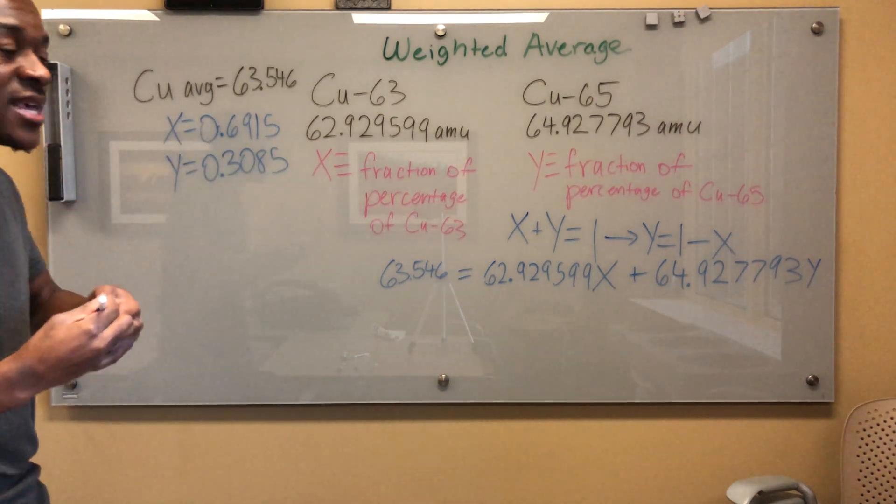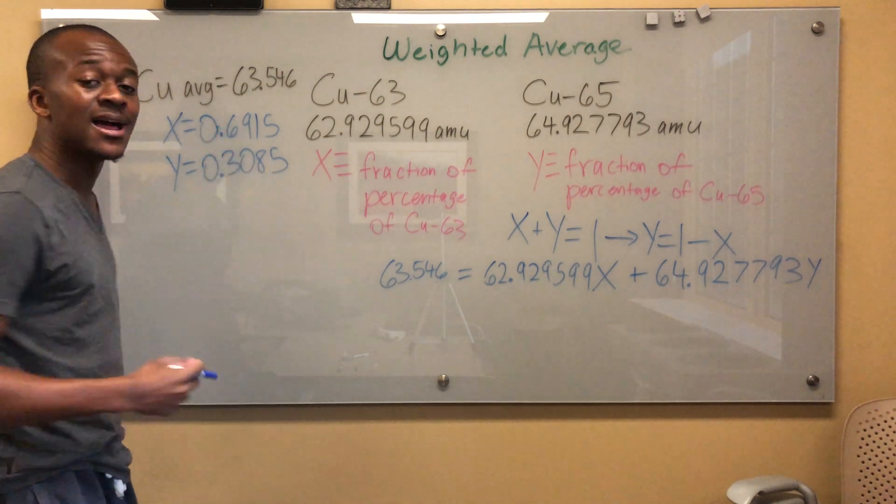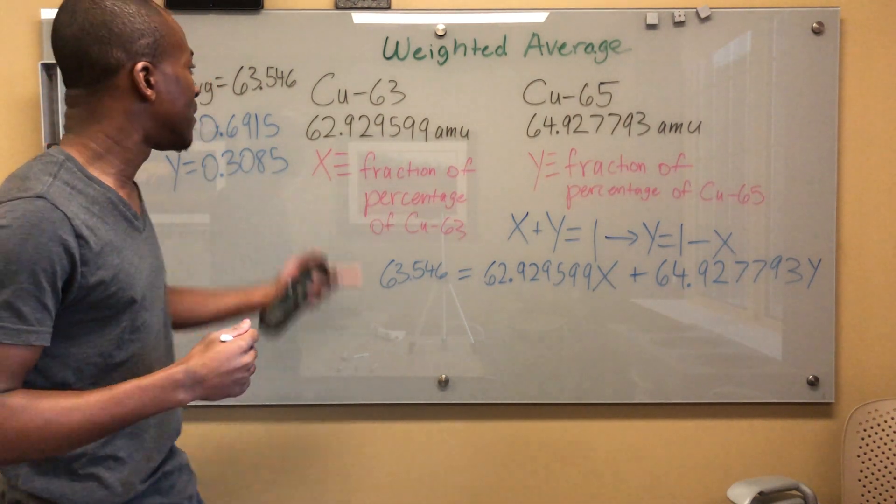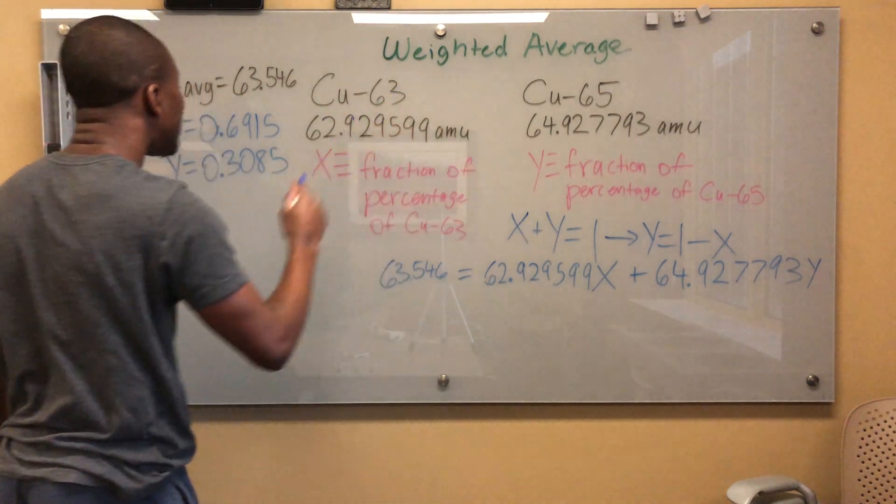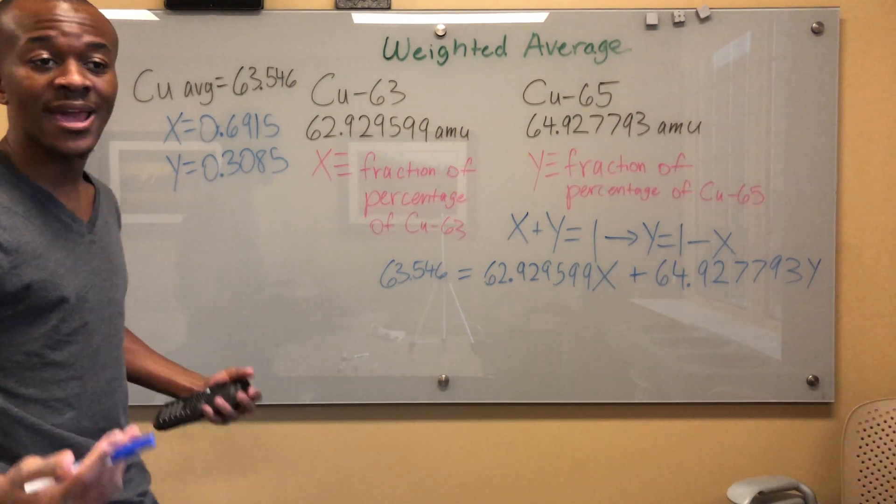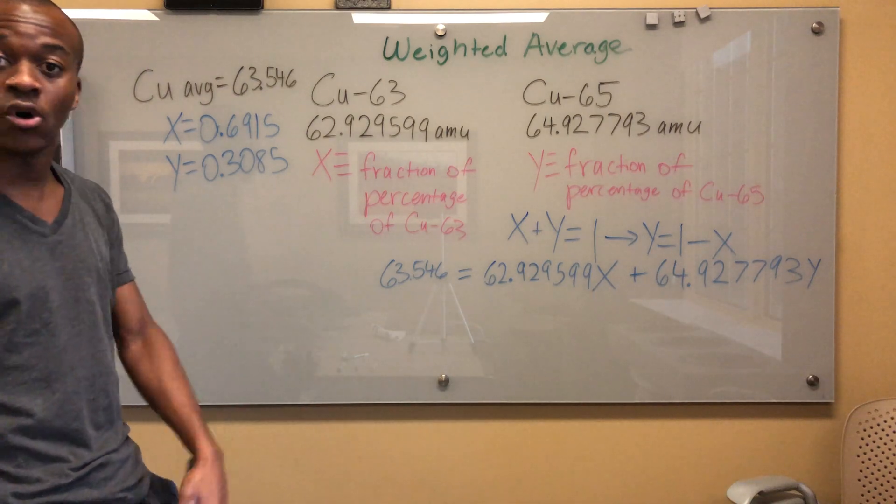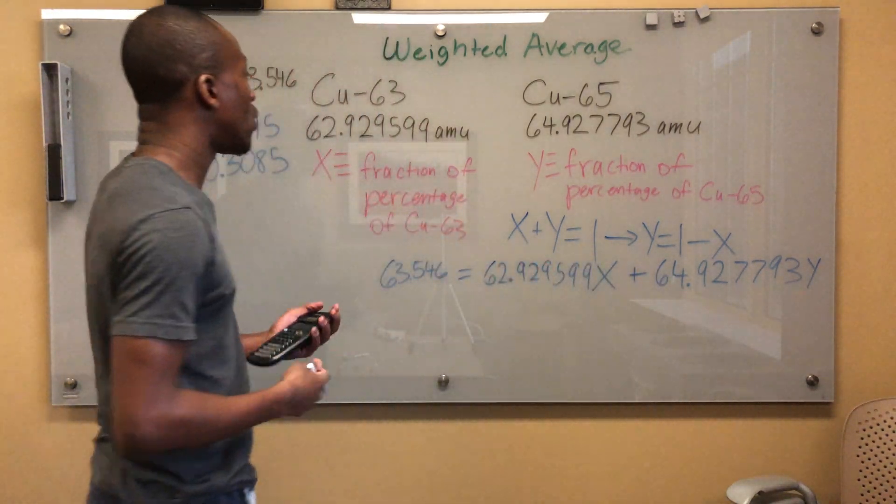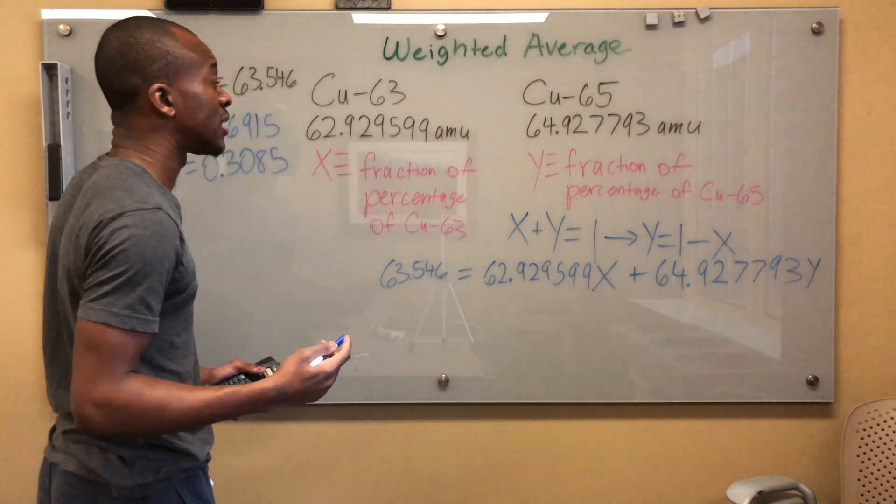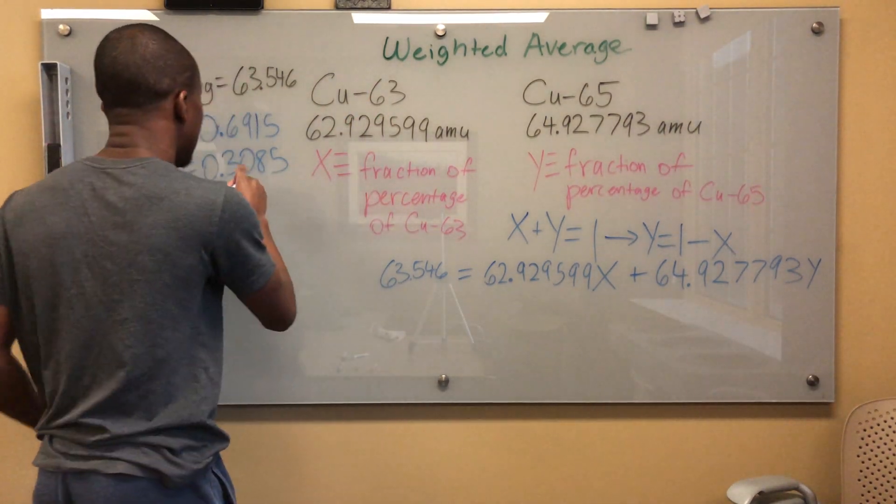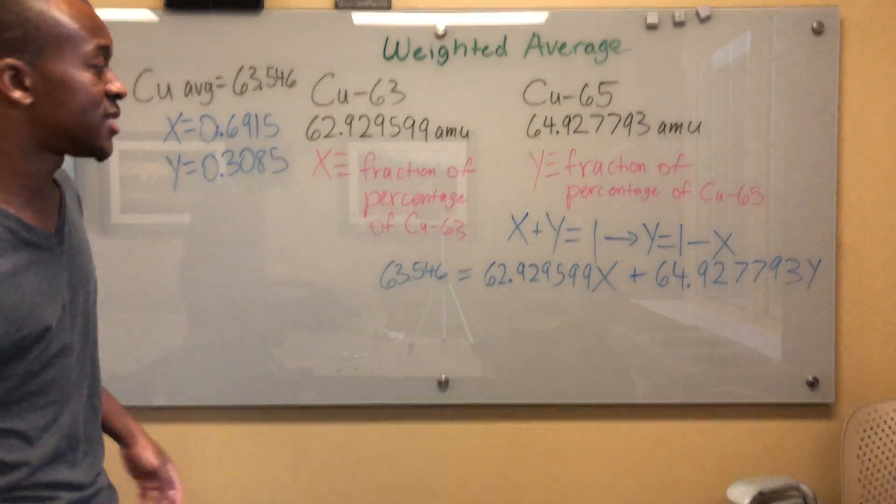And this is basically saying that you're going to find your Cu-63, 69.15% of the time. I believe this is copper, right? And you're going to find that the Cu-65, 30.85% of the time. If you notice, these should add up to 100% or 1, right? Like we said here. So this is basically saying that this is going to occur over two times the amount of time that this will occur.